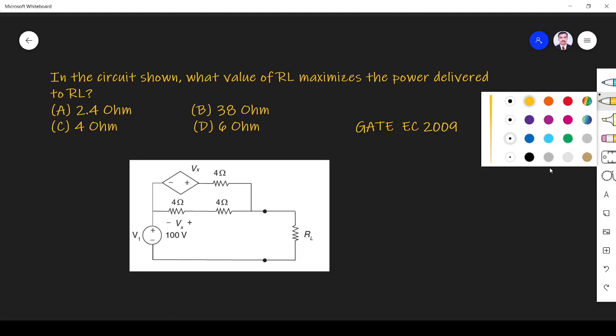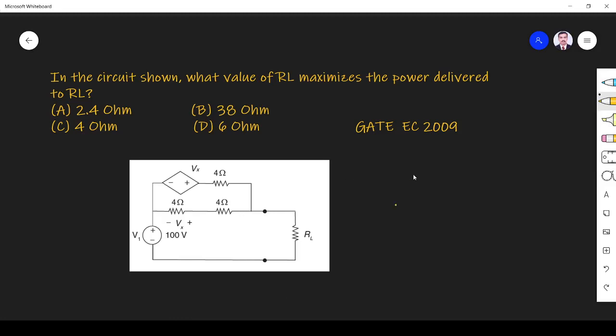Hi friends, in this video I have to solve a network theory related question from GATE ECE 2009 paper. The question is: in the circuit shown, what value of RL maximizes the power delivered to RL? So we have to find the value of RL for which the maximum power is delivered.